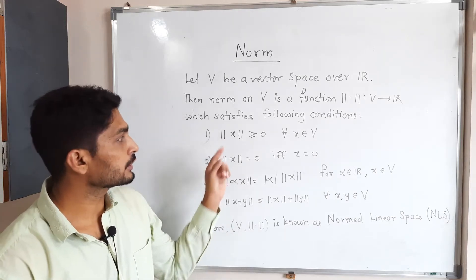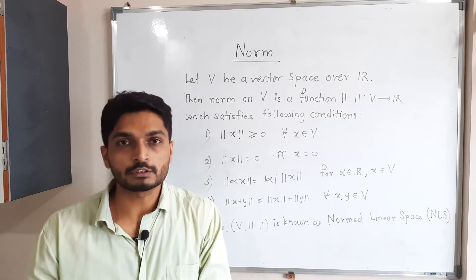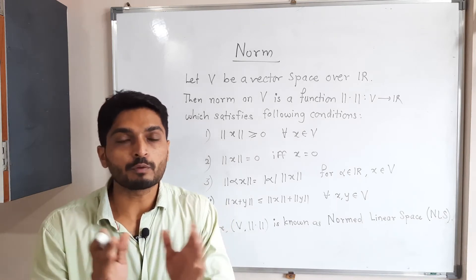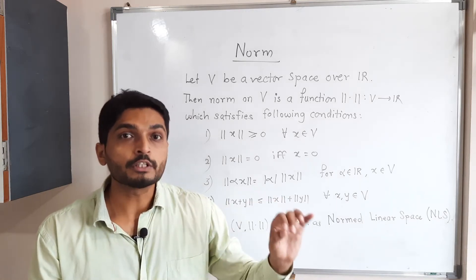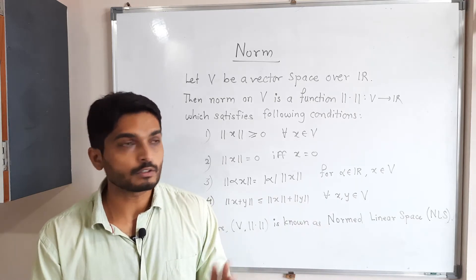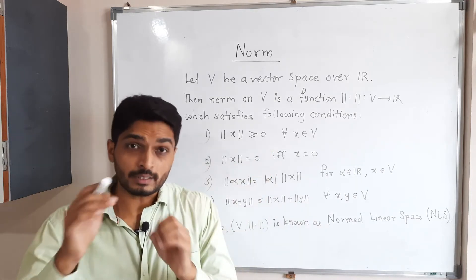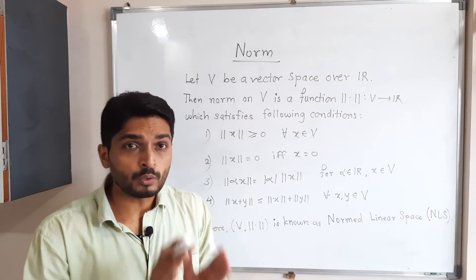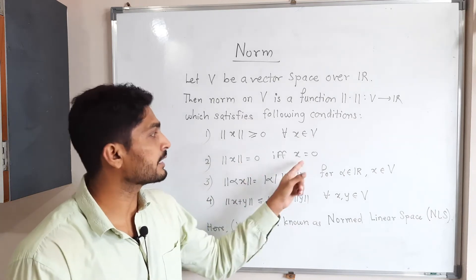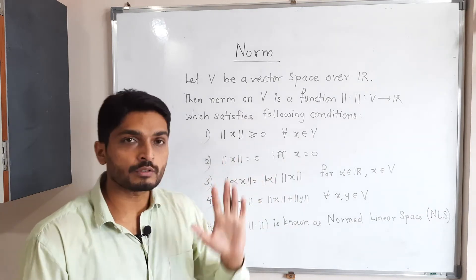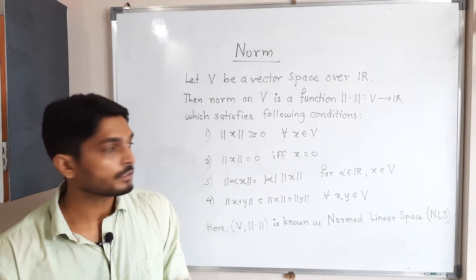First condition: when you operate that norm on any element, it should give a positive or non-negative value, greater than or equal to zero. Second, it gives zero value only when you put zero inside it — that means norm of x equals zero only if x equals zero.